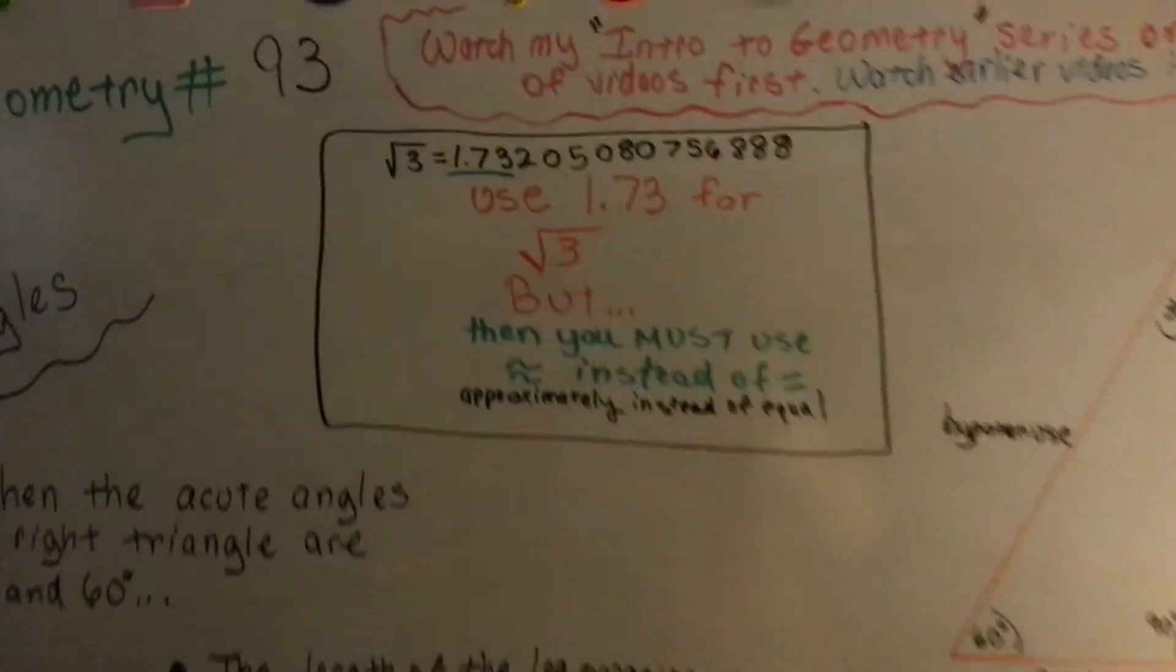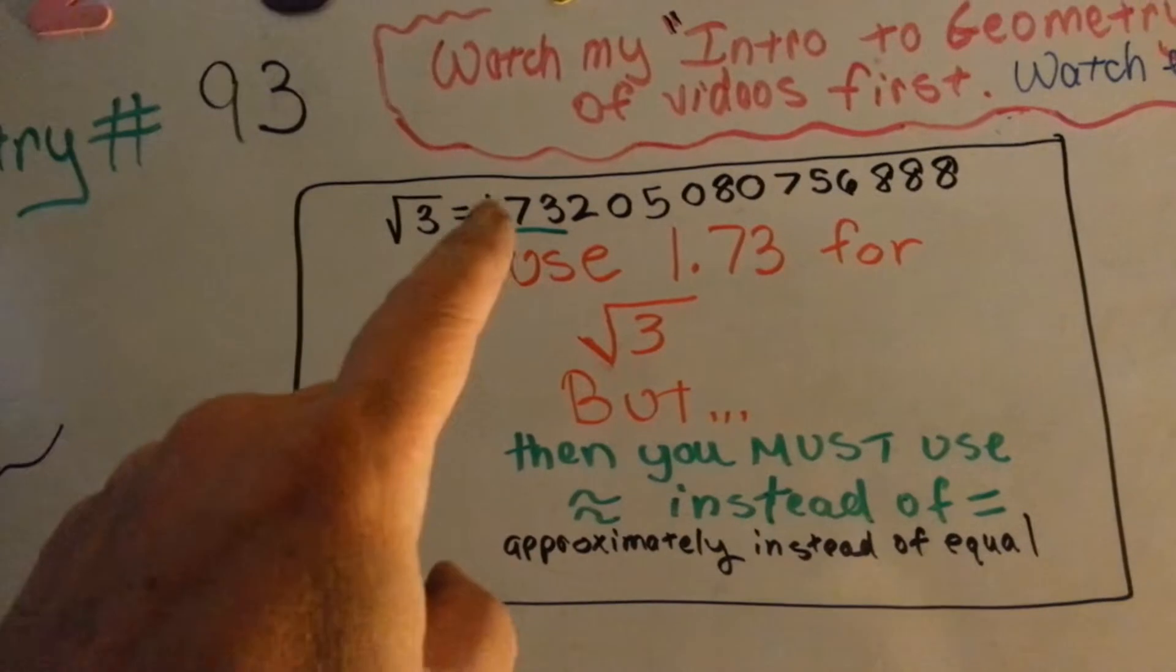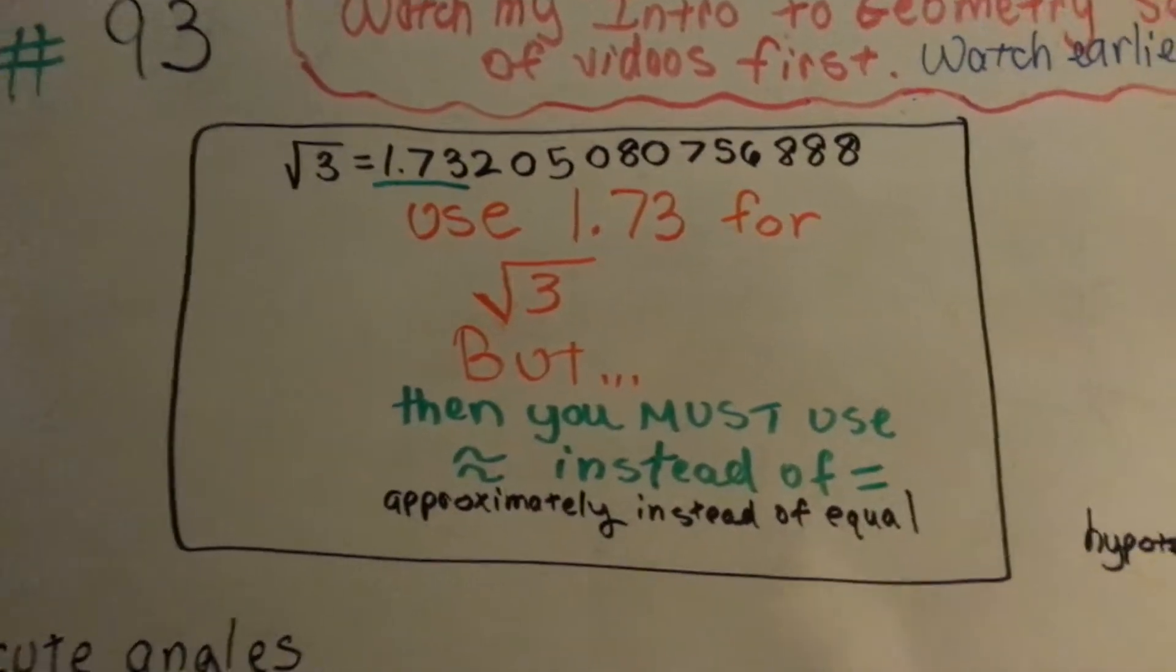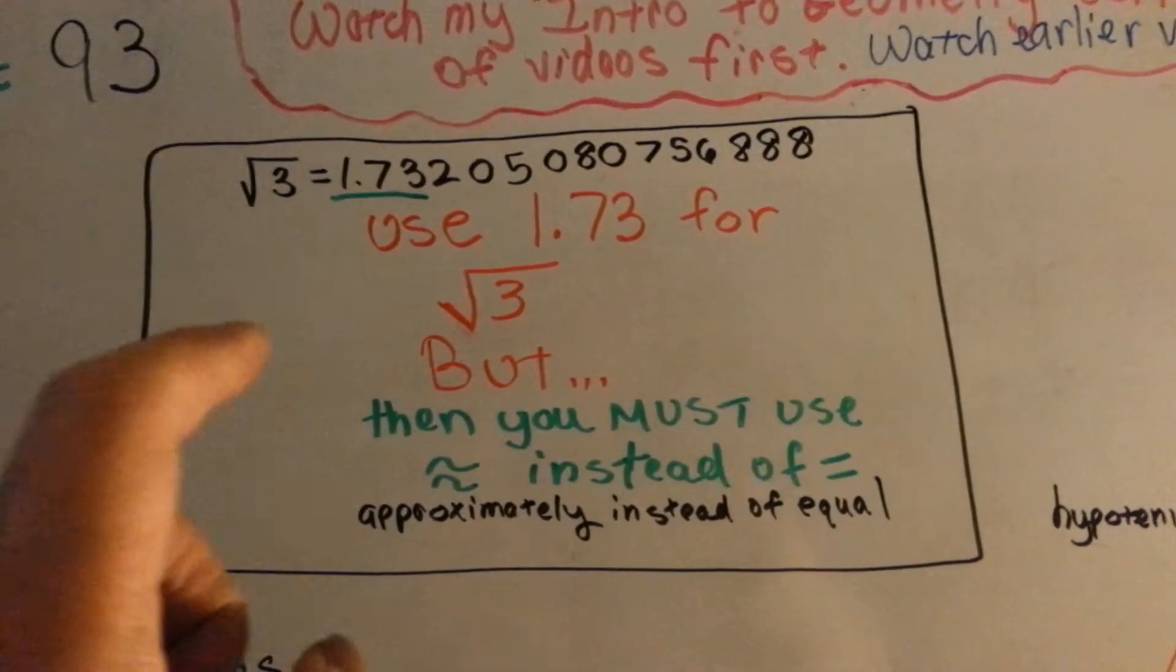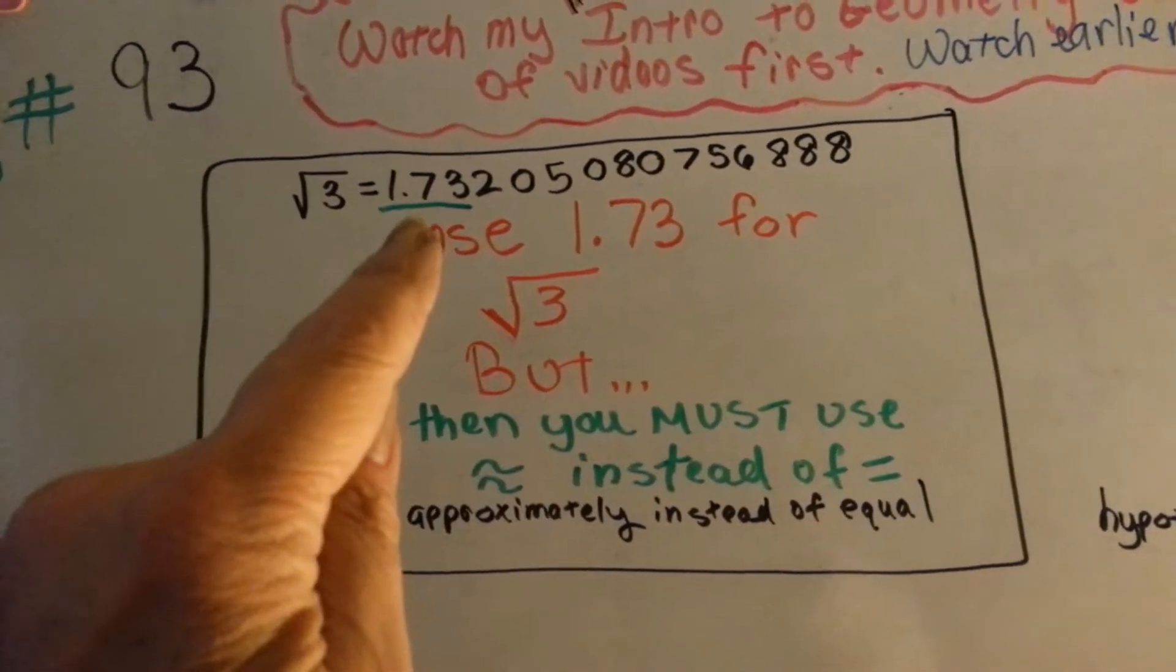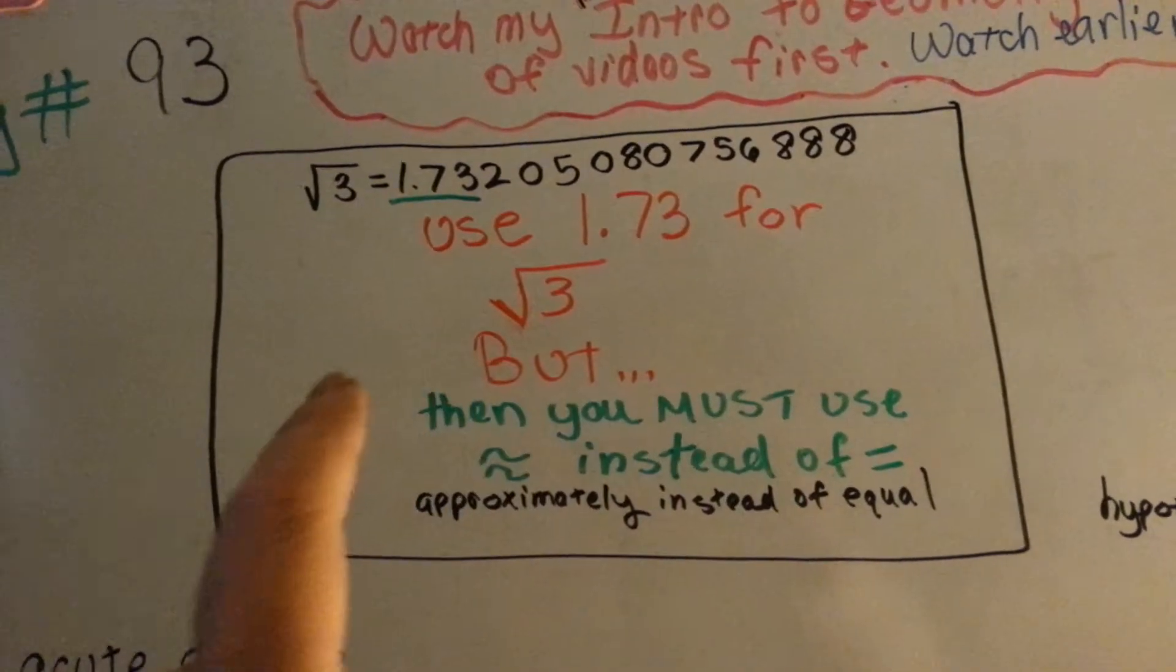Let me show you this. The square root of 3 is actually 1.73205080756888. Now you really don't want to multiply the side by that. So what is acceptable is you use 1.73, which is rounding it to the hundredths place for the square root of 3.